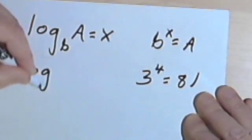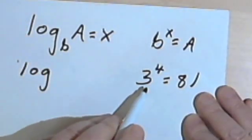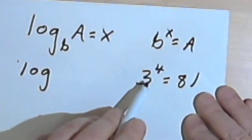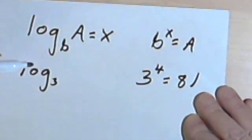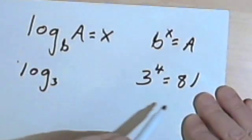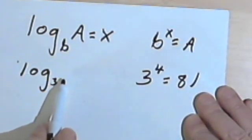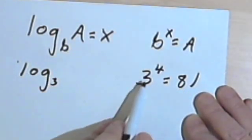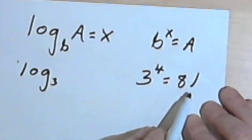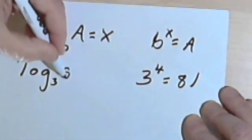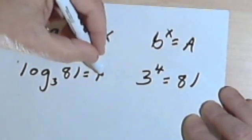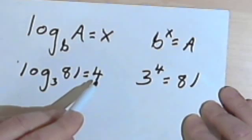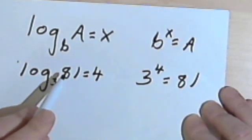So let's see how I write that. I've got the logarithm. The base is the base of my exponential equation, base 3, the log base 3, of the argument, what comes after log, is going to be what that whole exponential expression equaled. So the log base 3 of 81 equals 4. Because 3 raised to the 4th power equals 81.